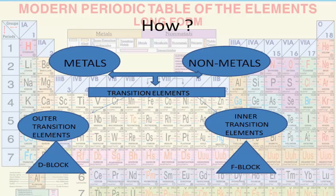Transition metals also exhibit metallic properties. Regarding magnetic behavior: if the electronic configuration has paired electrons, the element is called diamagnetic; if it has unpaired electrons, it is called paramagnetic. That is why iron, cobalt, and nickel are ferromagnetic — their unpaired electrons line up when in contact with a magnetic field and remain aligned, causing them to form permanent magnets.